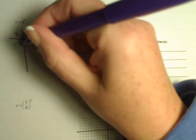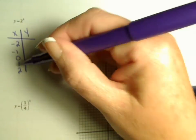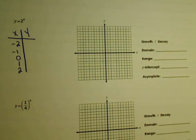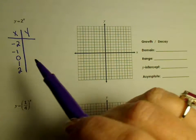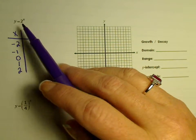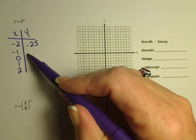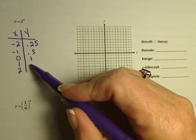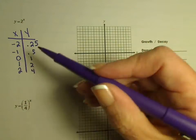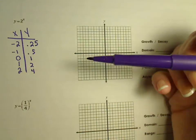Just like when we did the other page, you want to have your x values. They can be about anything, but I would definitely want to include some negatives, some positives, and zero. If you substitute them in for x, just like we had done earlier, this is what you're going to get — because 2 to the first power is 2, and so forth.